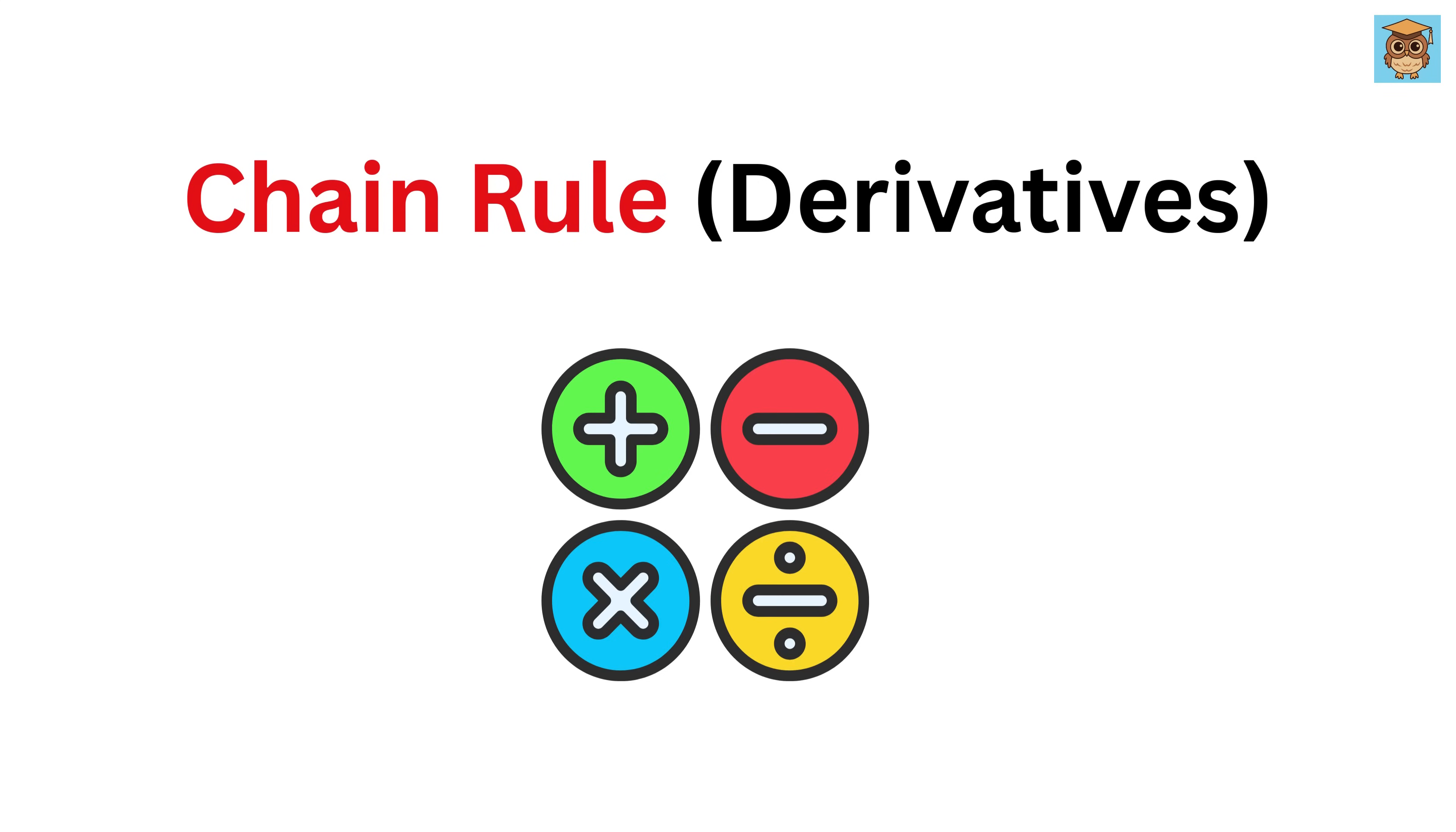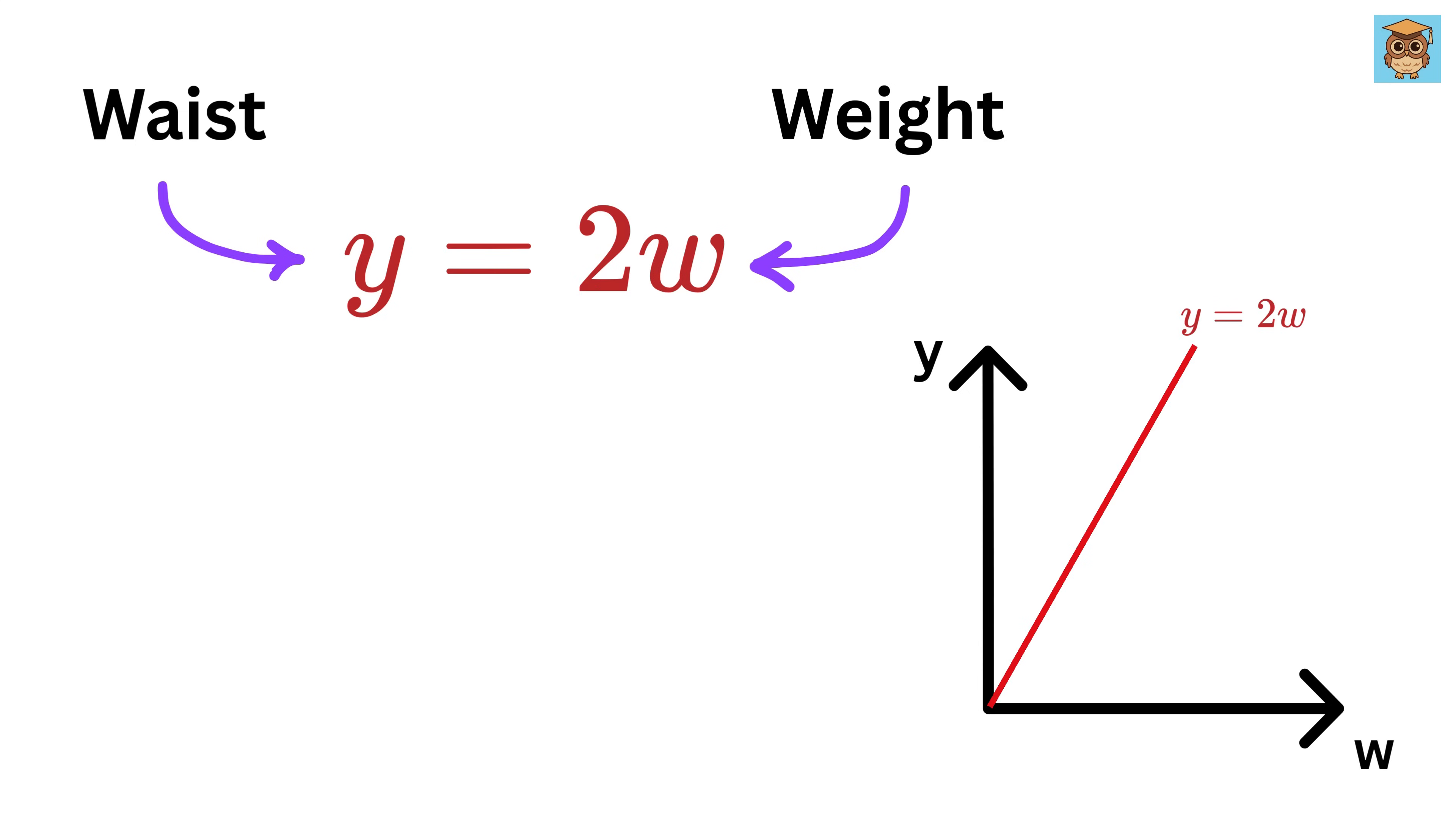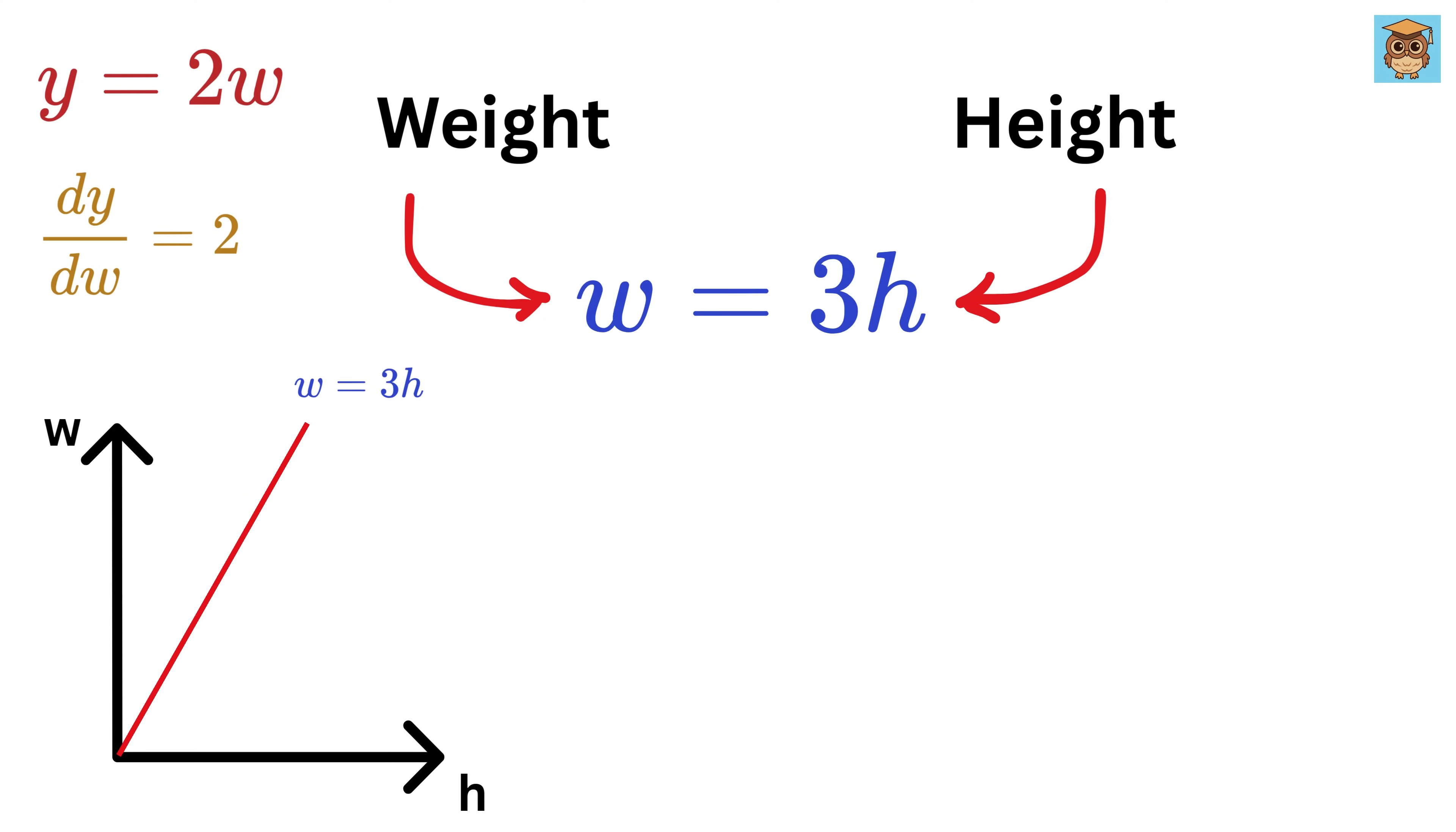Let's use some simple math to model this. This relation will be hypothetical and just used for explanation purposes. We'll say that waist size, which we'll call y, depends on weight w, and that relationship is y equals two times w. That means for every one unit increase in weight, the waist grows by two units, or the derivative of y with respect to w is simply two. Now, weight w depends on height h, and we'll say w equals three times h. This isn't from real-world data. It's just something that I made up to help us understand how the relationship works. So when someone's height increases by one unit, their weight increases by three units, or the derivative of w with respect to h is simply three.